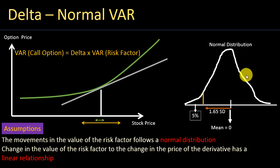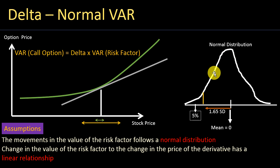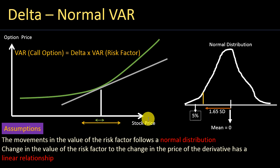We know that financial variables do not follow a normal distribution. Interest rates, FX, commodity prices, or even equity prices like stock prices — these financial variables normally exhibit fat tails. In other words, they could have extreme losses more than what a normal distribution would indicate. That's one of the major drawbacks of the delta normal approach, because we are assuming the daily changes in the risk factor, such as stock price, follow a normal distribution, which is not true.